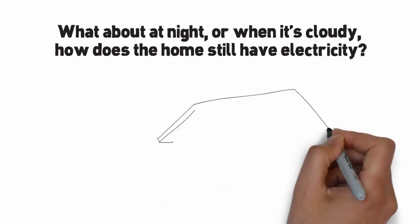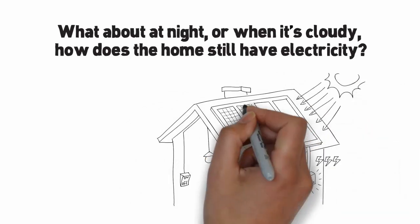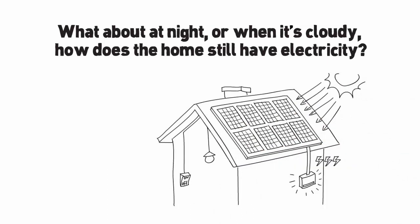In terms of the nightly question, in New York, New Jersey, and in most states, there is something called net metering, which basically means that you get the full value of solar electricity.